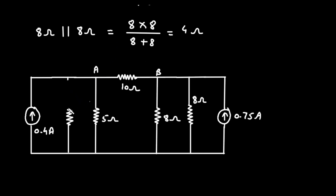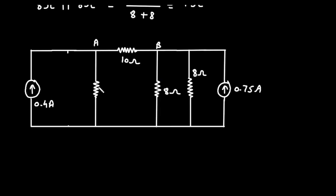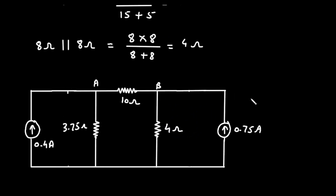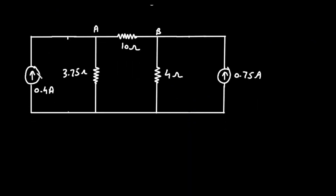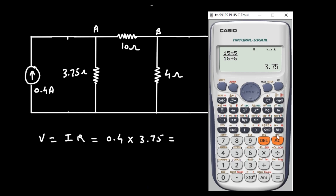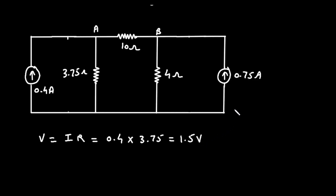We can replace the two 15 ohm parallel resistances by a single resistance of 3.75 ohm, and the two 8 ohm parallel resistances by a single resistance of 4 ohm. Now we can convert these current sources back to equivalent voltage sources. V is equal to I into R. The current is 0.4 ampere and the parallel branch resistance is 3.75 ohm, so 0.4 into 3.75 equals 1.5 volt.